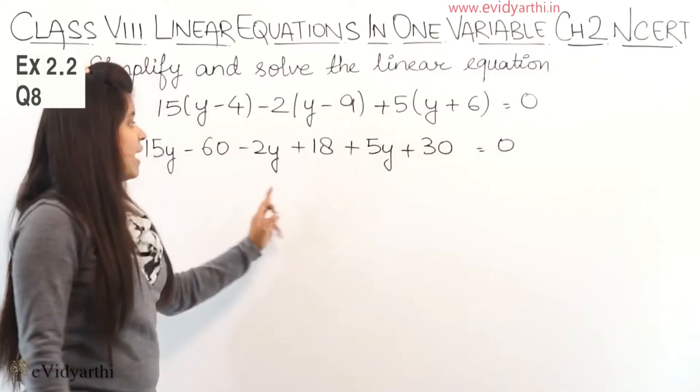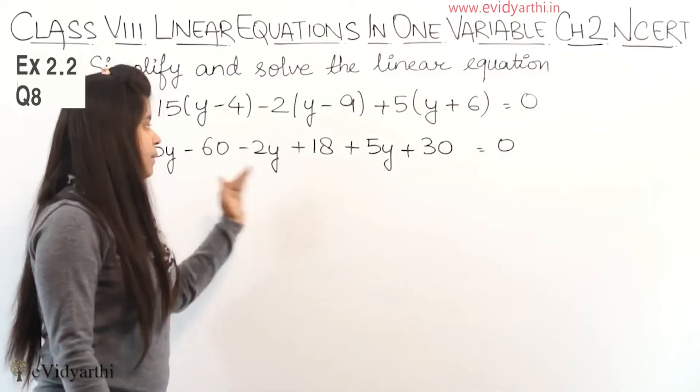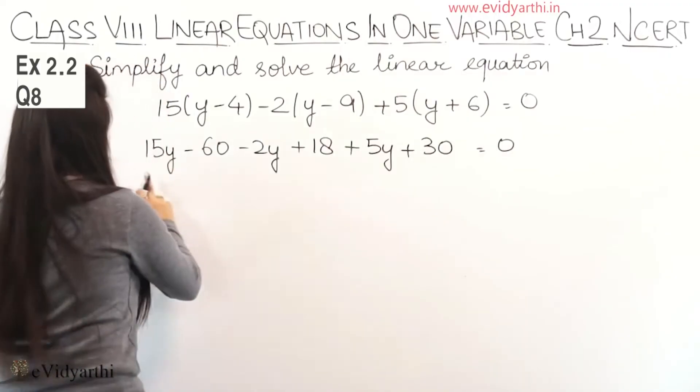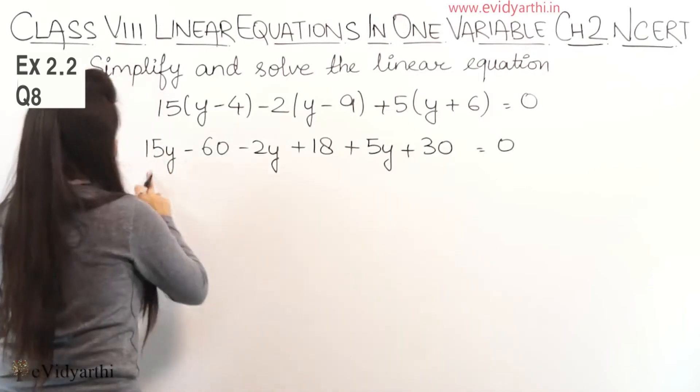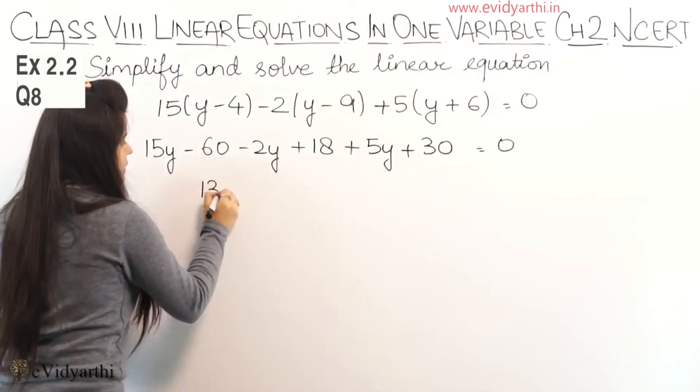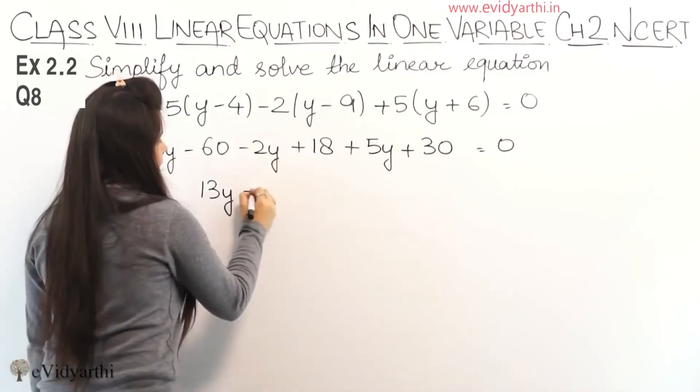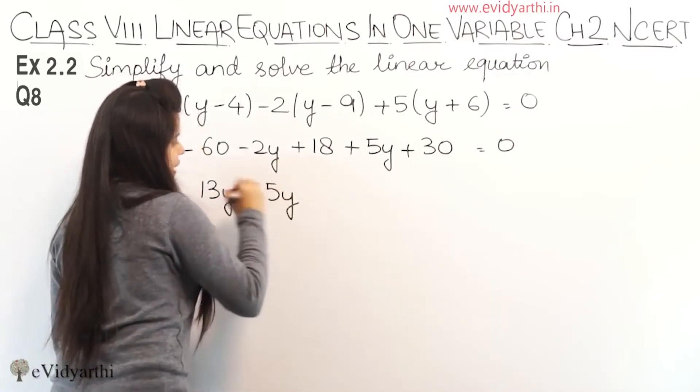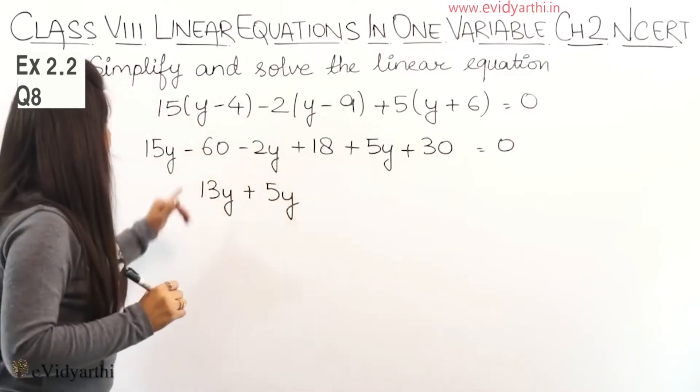Now we'll combine the y terms together and the other terms separately. We have 15y minus 2y: 15 minus 2 is 13, so 13y, and we still have plus 5y.